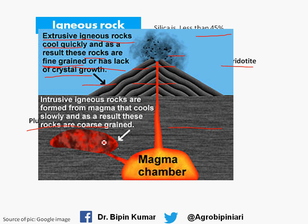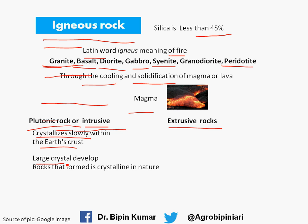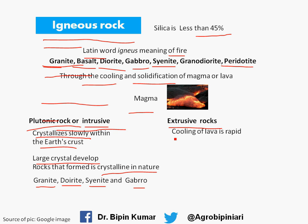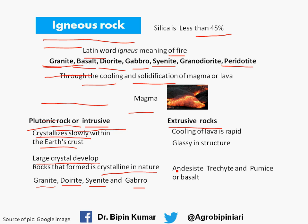Magma that cools inside the earth forms intrusive igneous rocks. Because the cooling process takes a very long time — cooling very slowly — these rocks form very coarse-grained structures and large crystals develop underground, making the rocks crystalline in nature. Examples are granite, diorite, syenite, and gabbro. For extrusive rocks, lava cools very rapidly, so it looks glassy in structure. Examples include andesite, trachyte, pumice, and basalt.